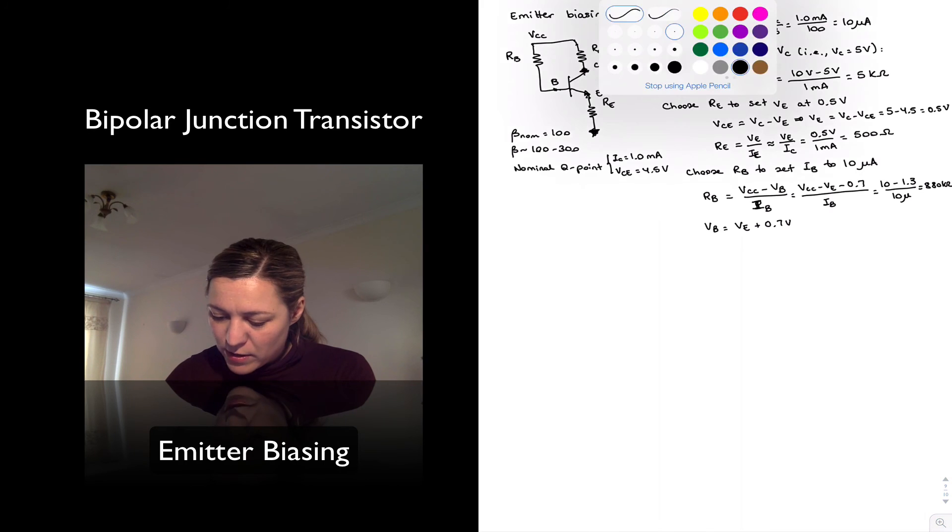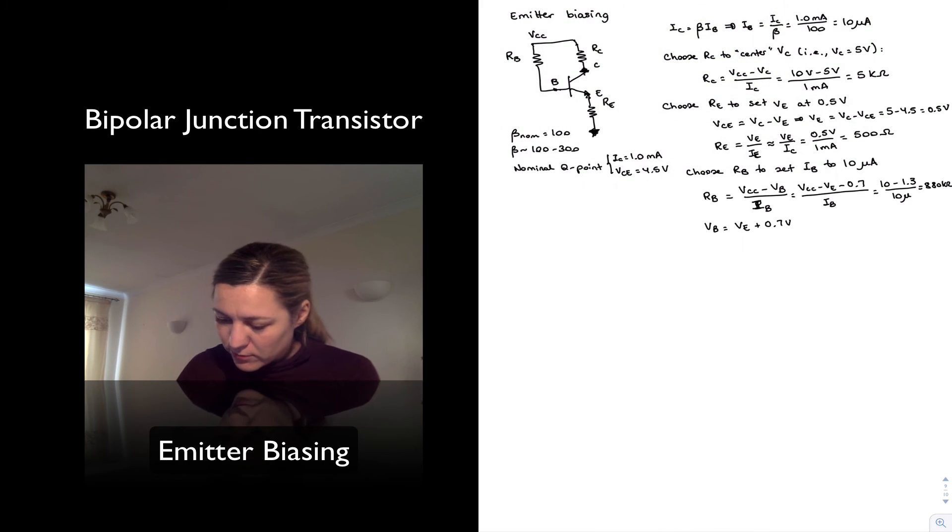So I have my three values. RC was 5 kilo-ohms. RE is 500 ohms. And RB is 880 kilo-ohms.